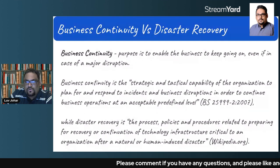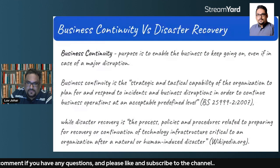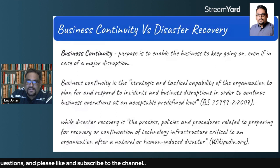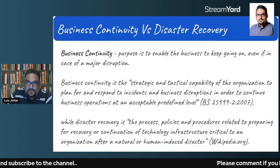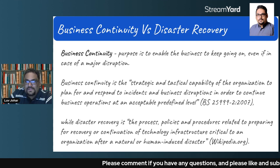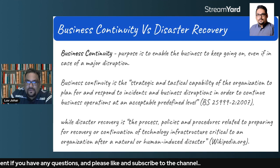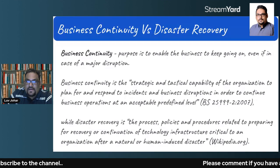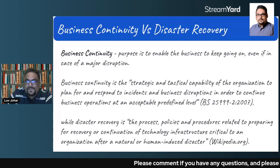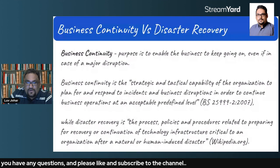Now let's try to understand what business continuity is. As the name suggests, the main purpose is to enable the business to keep going — to continue even in the case of a major disruption. What are the chances of a major disruption? It could be a man-made disruption like a malware attack or ransomware attack, or it can be a natural disaster like an earthquake, fire, or floods. Business continuity wants your business to survive and continue despite a major disruption.